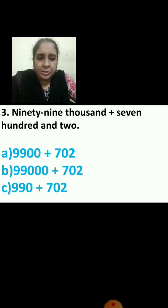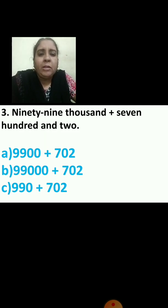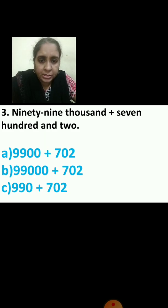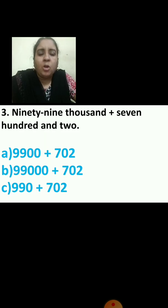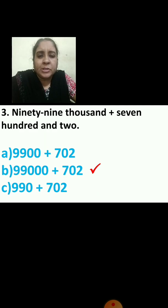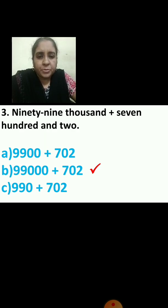Now let us do the third question. 99,000 plus 702. I am repeating the question — pay attention: 99,000 plus 702. This is written in words, right? You have to say which is the correct option. The correct answer is 99,000 plus 702.